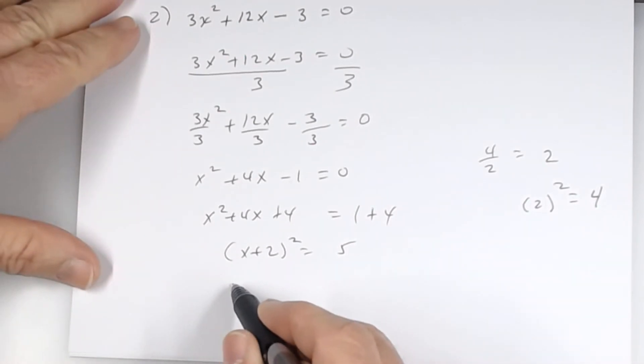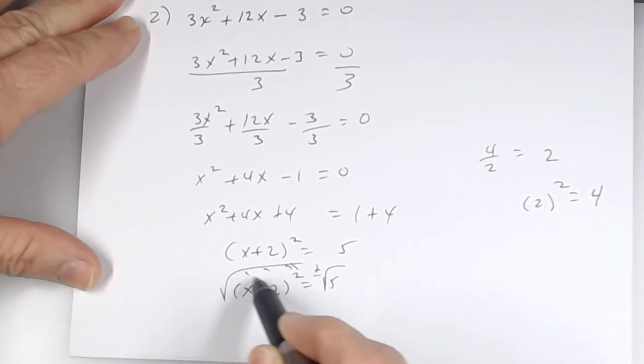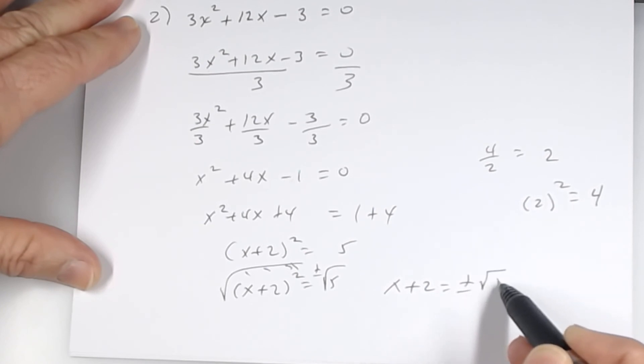So, you're going to go ahead and write this over. Square root. Square root. Plus or minus. So, I get x plus 2 equals plus or minus square root of 5.